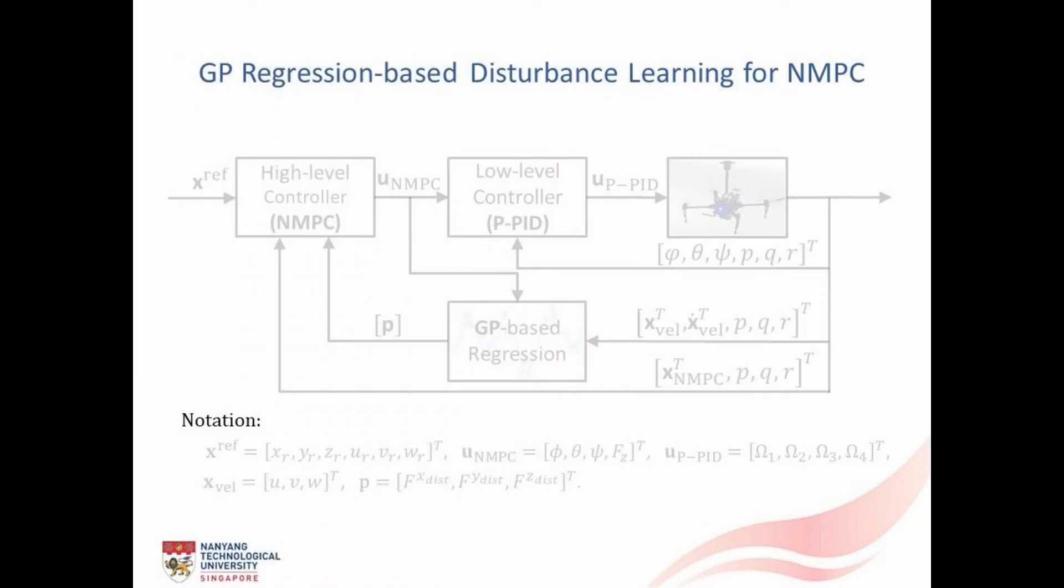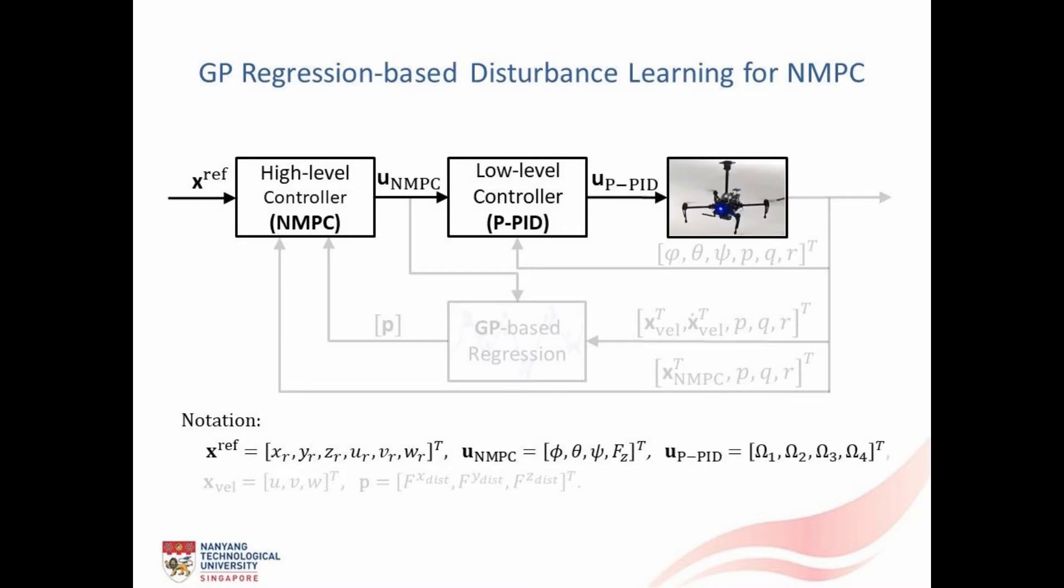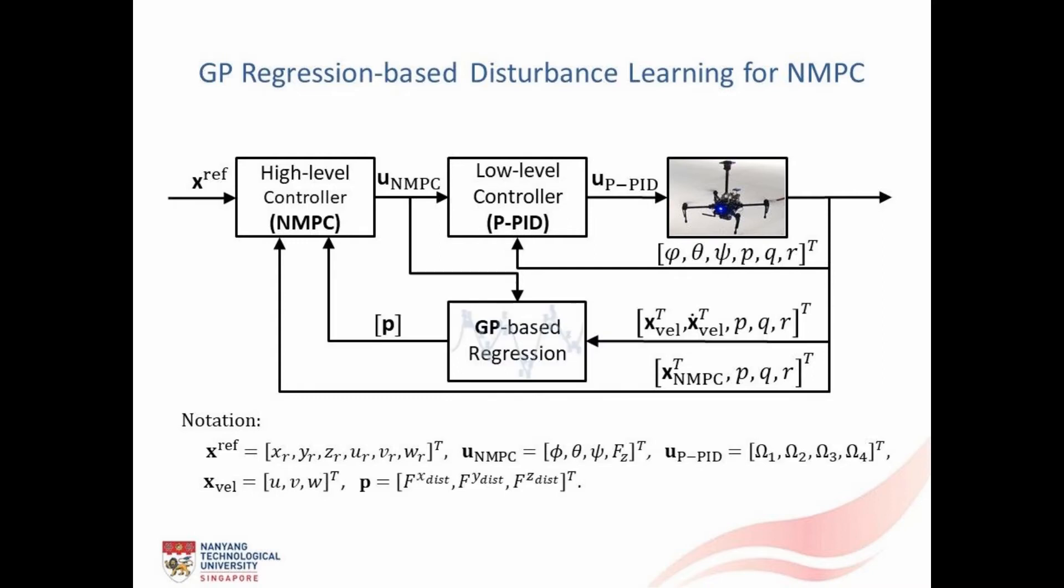In terms of the control framework, we design NMPC as a high-level position controller that takes the trajectory reference from the navigation algorithm. By solving the formulated optimal control problem, NMPC commands the attitude angles and throttle to the low-level controller performing the attitude control. This results in the conventional NMPC-based position control, which is unfortunately sensitive to uncertainties. Hence, we utilize a GP model that learns the external disturbances acting on the robot and thus making NMPC adaptive to the changing environment.